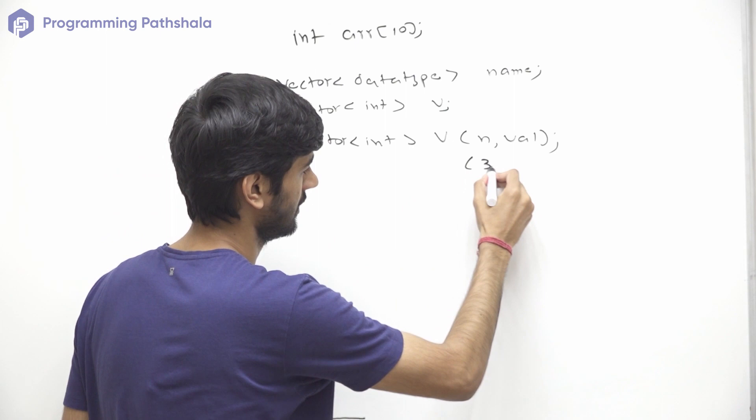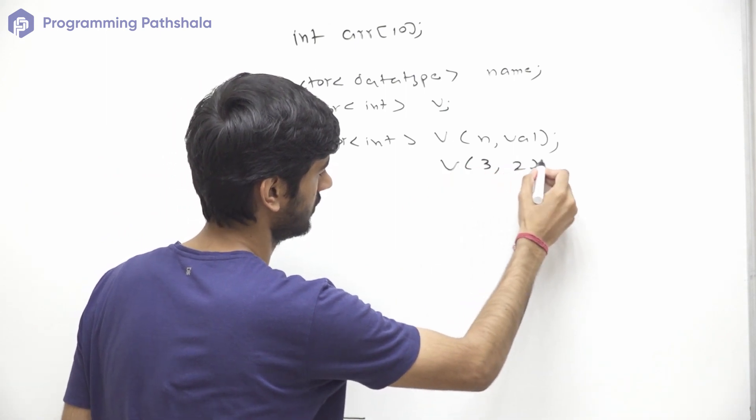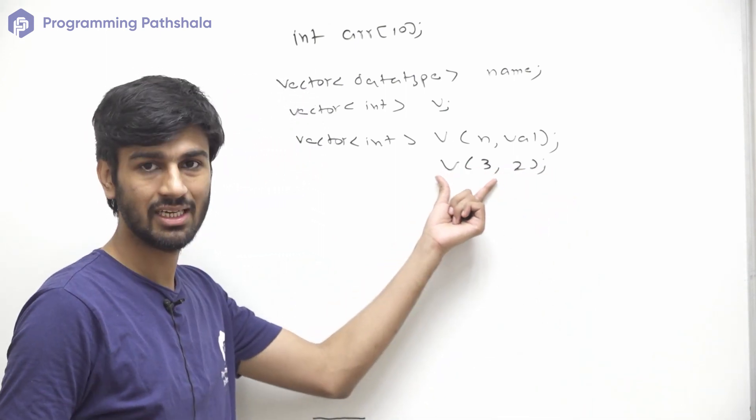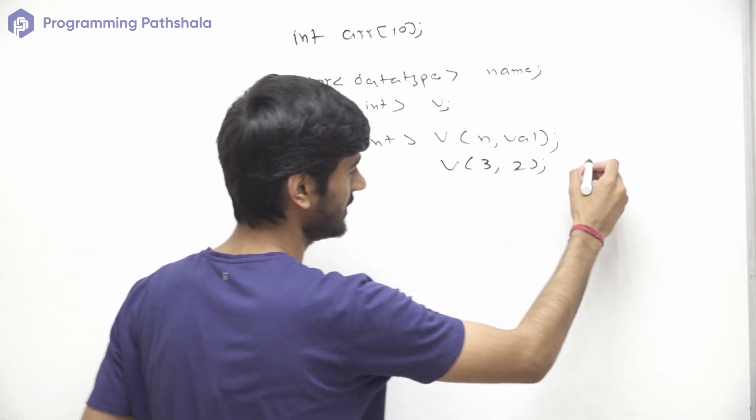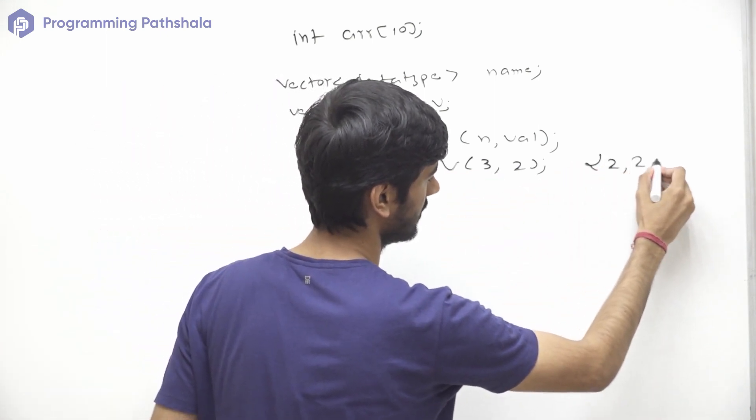For example, v<int>(3,2). So this will initialize a vector with size 3 and all the elements having value 2. Something like this. So this will be the resultant of this constructor.